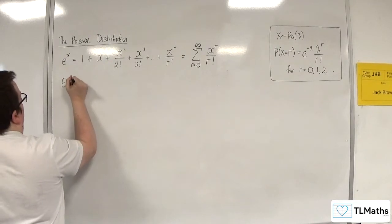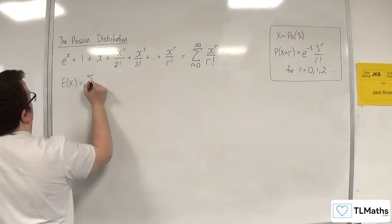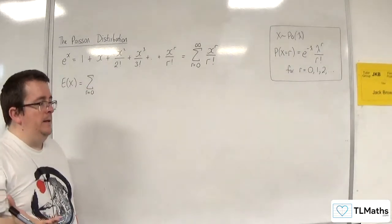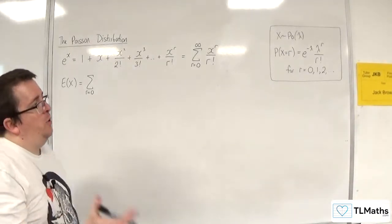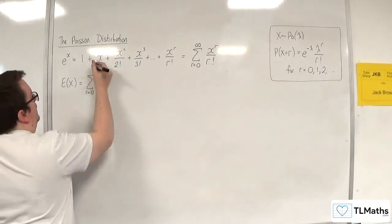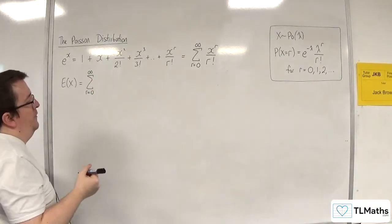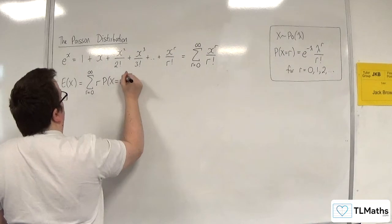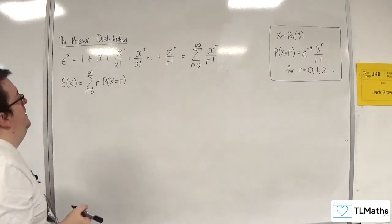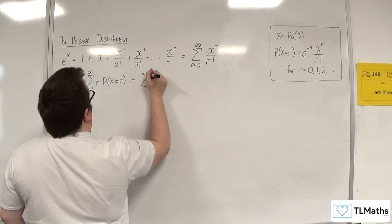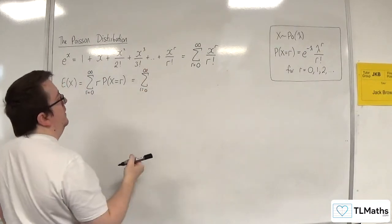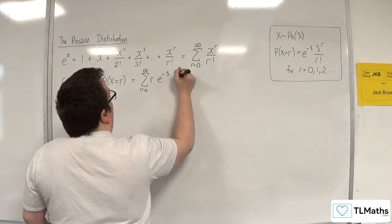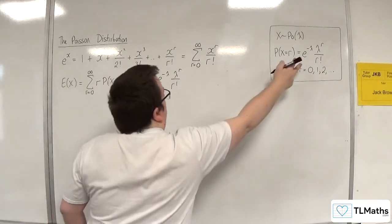We know that E(x) is equal to the sum from r equals 0. We would usually say r equals 0 up to n, but because the Poisson distribution goes on forever there is no upper limit, so this is r equals 0 to infinity — an infinite sum of r times each of the respective probabilities. I can then write that as the sum from r equals 0 to infinity of r times e to the minus lambda times lambda to the r over r factorial, just replacing the formula in there.